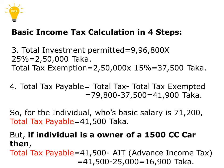Now, if the individual is the owner of a 1500cc car, what will happen? Total tax payable equals 41,500 Taka minus AIT. AIT means advance income tax for the vehicle, which has already been deposited while making the car fit. He has already paid 25,000 Taka AIT. So total tax payable will be 41,500 minus 25,000, which comes to 16,900 Taka.